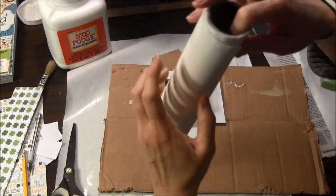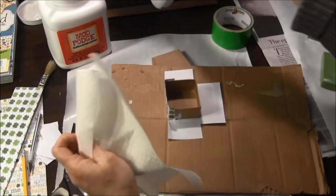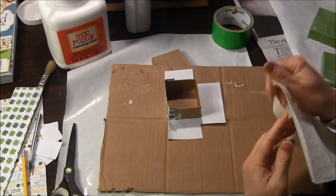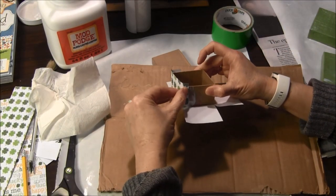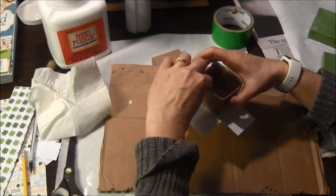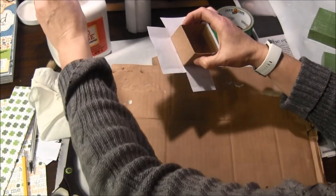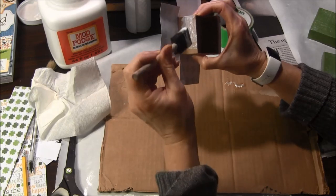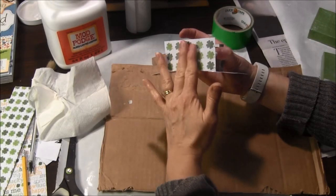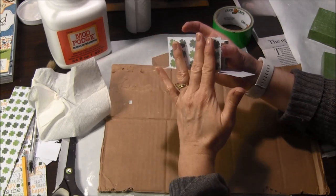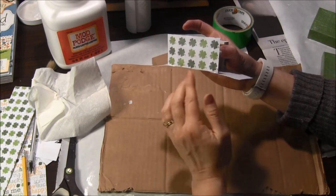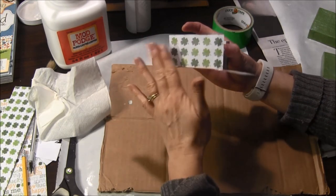You might need some paper towels also so you can wipe off your fingers as you get some glue on it, the Mod Podge. I'm going to continue with the second, the other side, the opposite side and smooth it out. You can also use a credit card or some kind of card to run along there and smooth it to make sure it stays smooth.